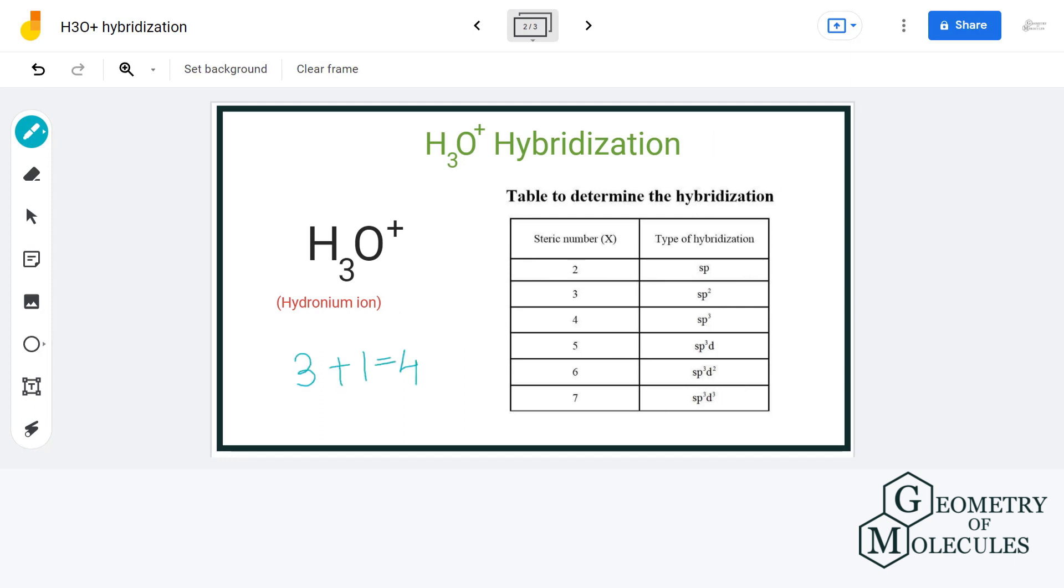Now that corresponds to sp3 hybridization. Thus we can say that H3O positive has sp3 hybridization.